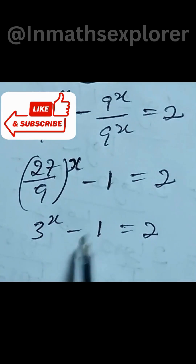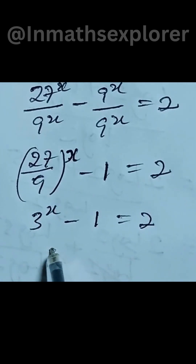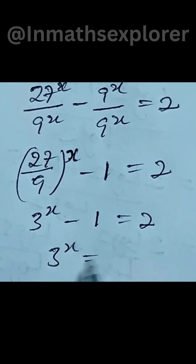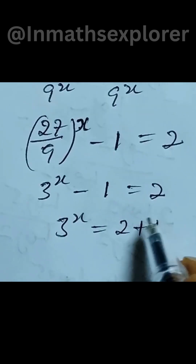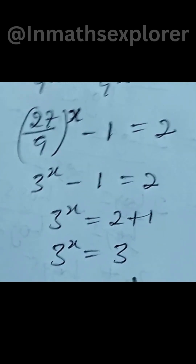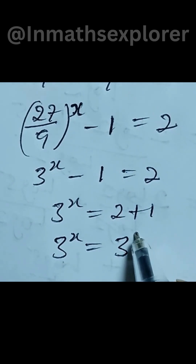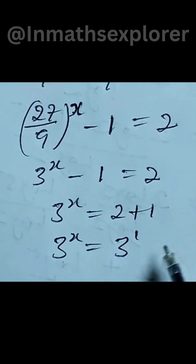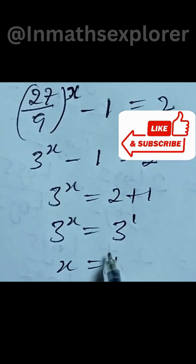I'll move this minus 1 to the right hand side, and that becomes 3 to the power of x equal to 2 plus 1, which is equal to 3 to the power of x equal to 3. Since 3 also means 3 to the power of 1, equating the exponents means x is equal to 1.